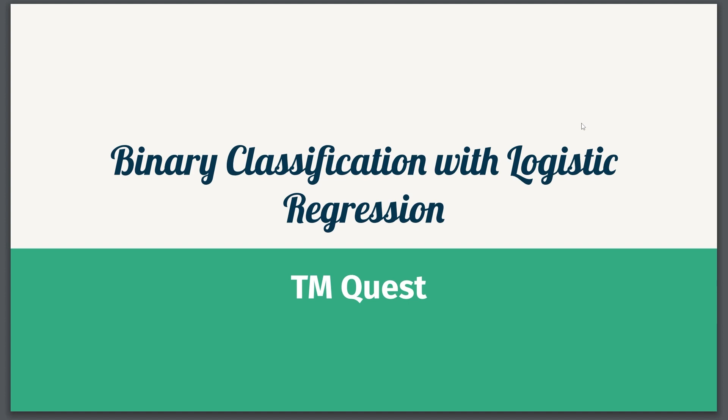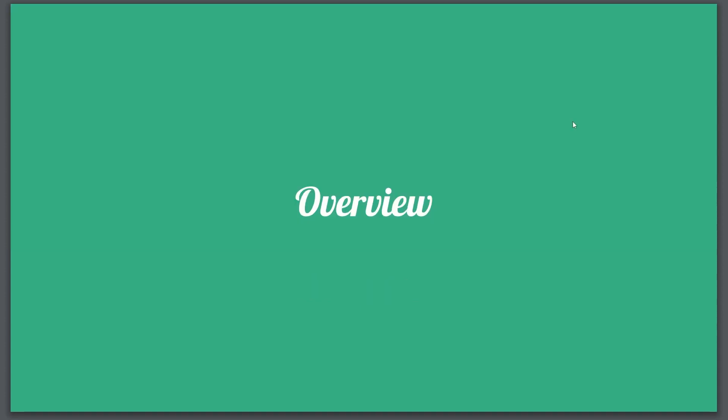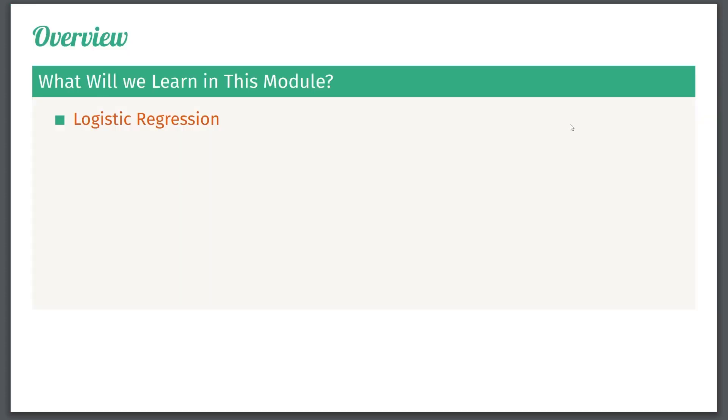Before we jump into the details, let's have a quick overview of what we'll cover in this module. First of all, we'll talk about logistic regression. This requires us to first talk about what is really binary classification. Secondly, we need to know how to train a logistic regression model in practice. So specifically in the library scikit-learn, how do we actually implement a logistic regression model?